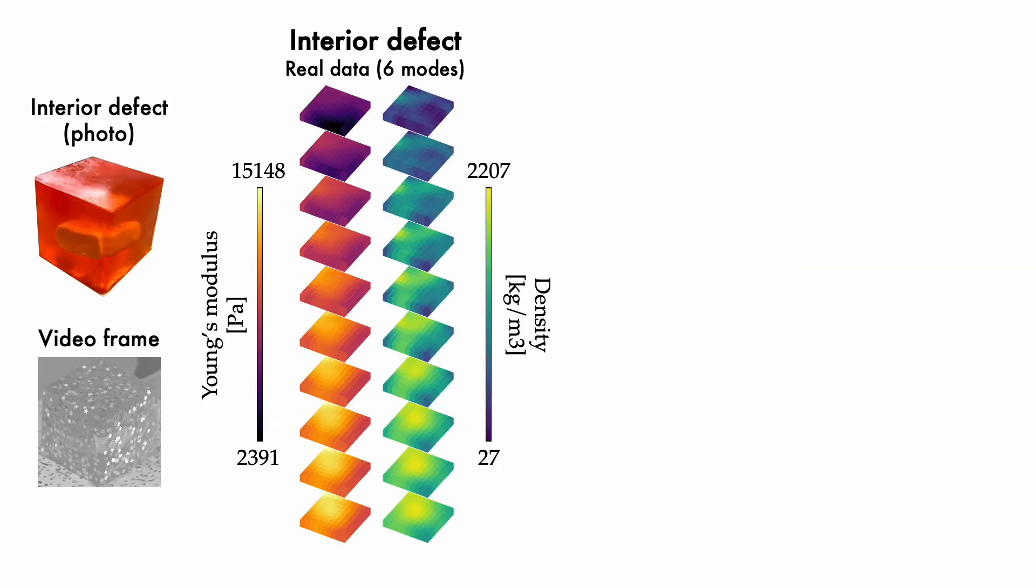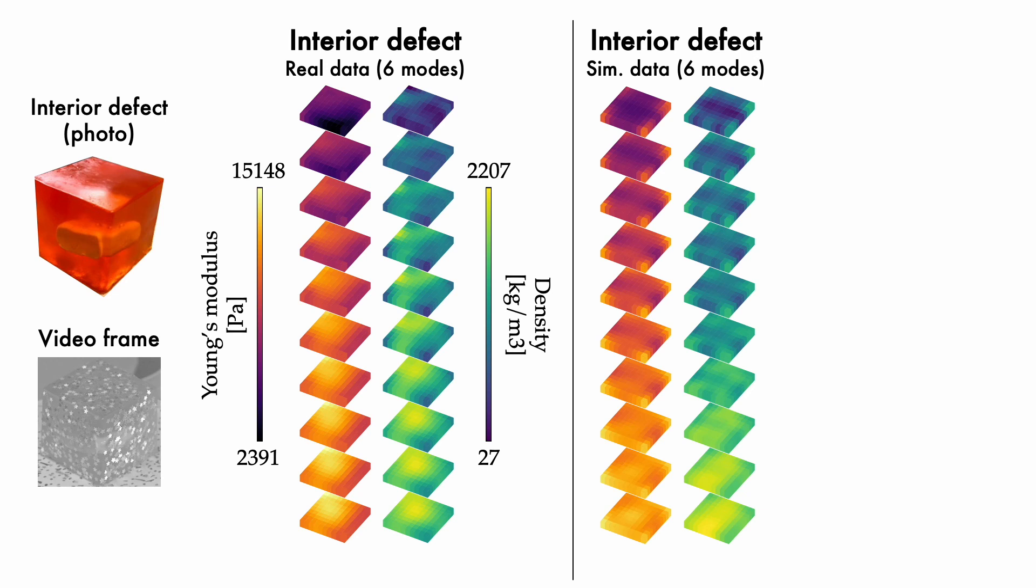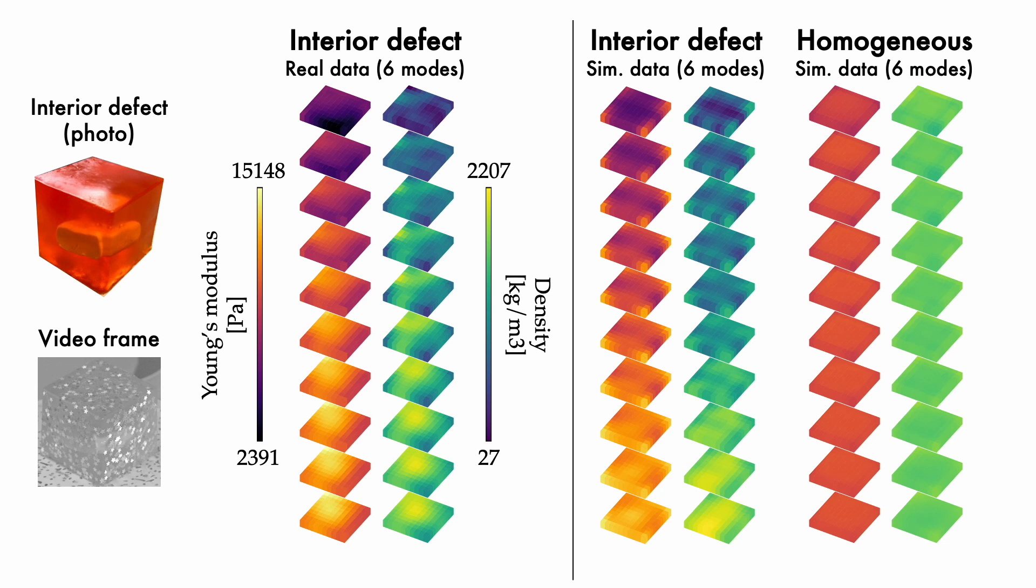Even with just six constraining modes, we were able to identify an inhomogeneity in the cube with our method. This is further verified by comparing to the reconstruction obtained from simulated data. Importantly, the reconstruction for a cube without a defect, using a comparable set of six modes, does not indicate any inhomogeneity. We hope that this result will inspire future work to develop a robust method for real-world objects.